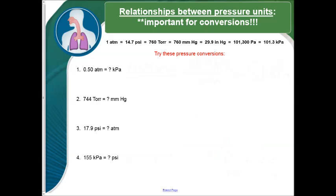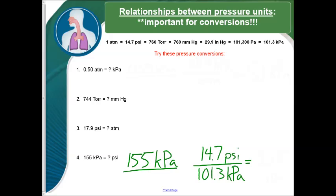Okay, our last example, we have 155 kilopascals, and we want to convert that to psi. So we start with 155 kilopascals, and our conversion will be 101.3 kilopascals is equal to 14.7. Now our kilopascals will cancel out, and we will be left with 22.5 psi.